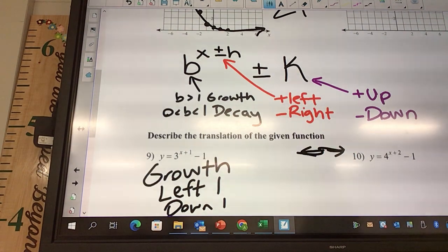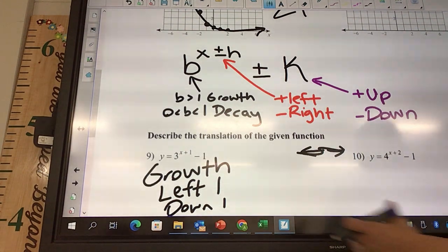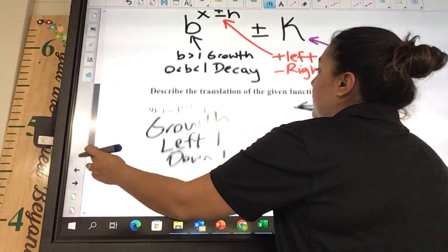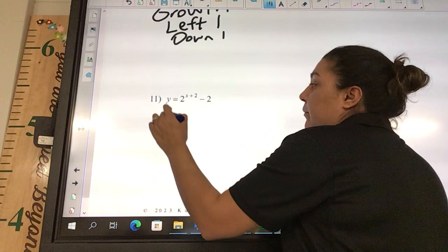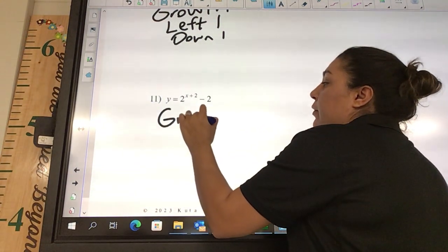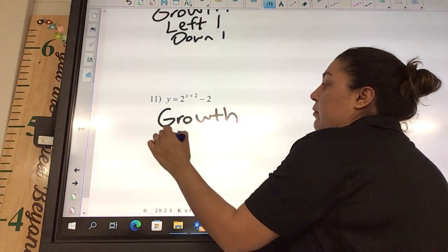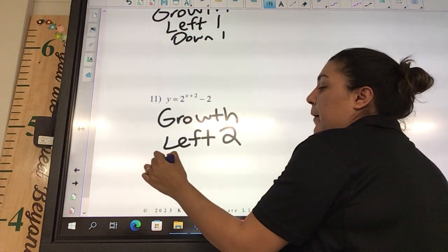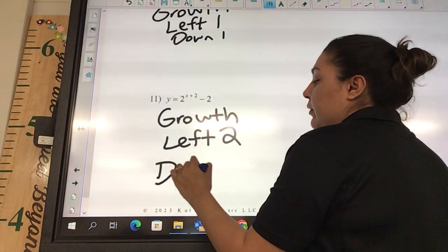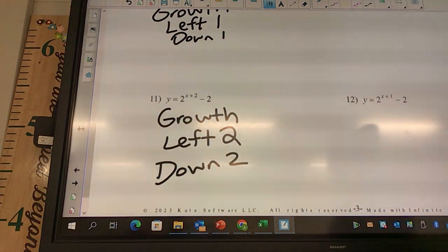Sorry, we should be like, oh no, I meant - no, I don't want to hear it. If you're not finished with these notes, I will go back. Problem 11, growth or decay? Growth. It is growth. What does that plus 2 do? Left 2. Then what? Down 2. Good.